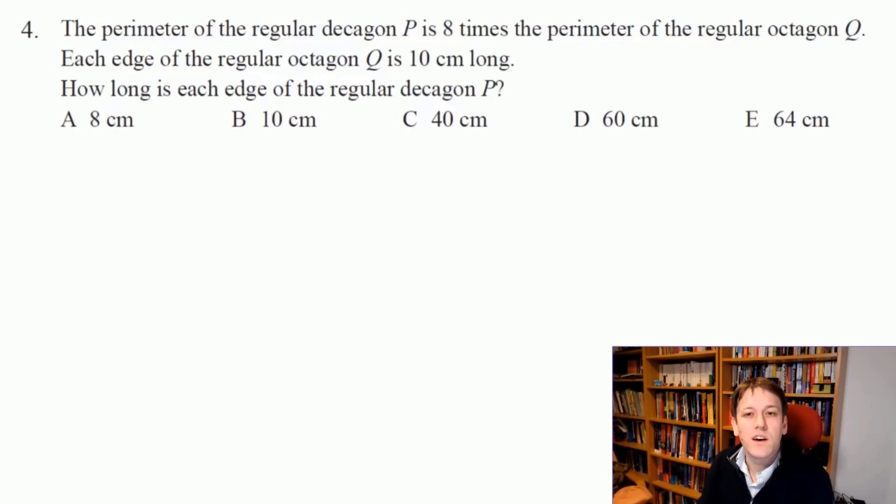In a regular shape, all of the sides have the same length. We know the edge of the regular octagon is 10 centimeters and an octagon has 8 sides. So 10 times 8 is 80 centimeters, which is the perimeter of the octagon. We know the decagon's perimeter is 8 times the perimeter of the octagon, so the decagon's perimeter is 8 times 80, which is 640. The decagon has 10 sides, so each of its edges must be 640 over 10, which is 64 centimeters long. And so the answer is E.